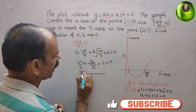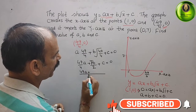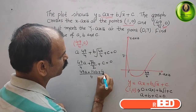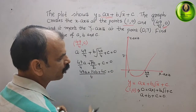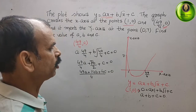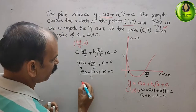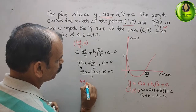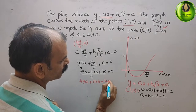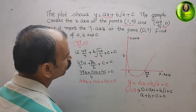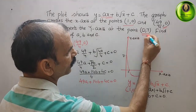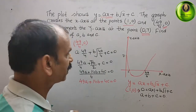Taking the LCM as 4 and multiplying through, we get: 49a + 14b + 4c = 0. This is the second equation for our system.